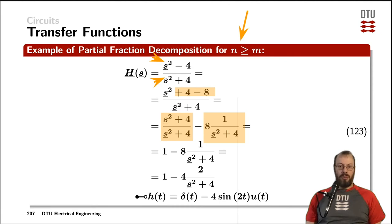That means the first one simplifies to the number one, and later on we can simplify the second one into something where we can find the corresponding function in a Laplace table. So at the end of the day, the transfer function in the time domain here is the Dirac impulse from the number one and a sinusoidal response with an amplitude of four multiplied with the unity step for the second fraction.